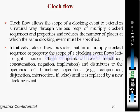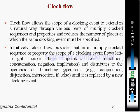Clock flow allows the scope of a clocking event to extend in a natural way through various parts of multiply clocked sequences and properties. Therefore, it reduces the number of places at which the same clocking event must be specified. Intuitively, clock flow provides that in a multiply clocked sequence or property, the scope of a clocking event flows left to right across linear operators. So clock flow should be considered from left to right. Examples of linear operators are: repetition operator, concatenation operator, negation, and implication.